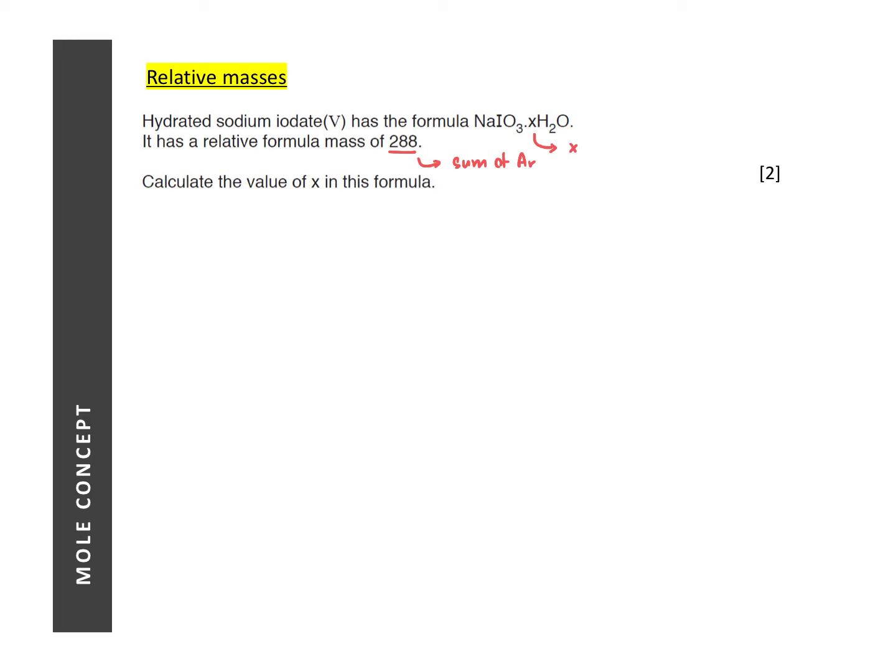So what we need to do now is to look for the atomic masses of the different elements. So we have sodium plus iodine plus there are 3 oxygen, so 3 times 16 plus X times H2O. Now the X applies to H2O.